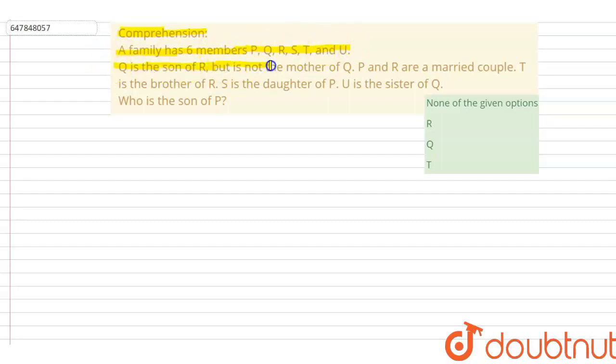Q is the son of R but R is not the mother of Q. P and R are a married couple. T is the brother of R. S is the daughter of P. U is the sister of Q, who is son of P.